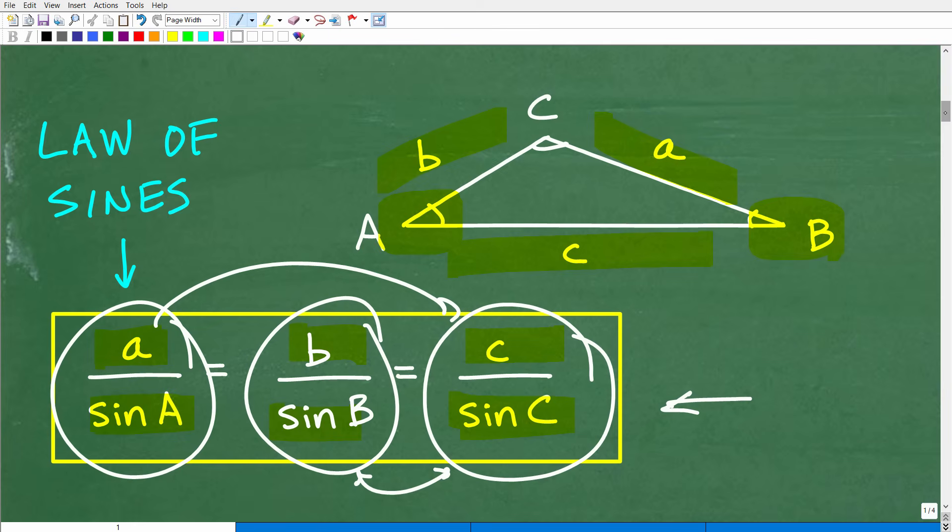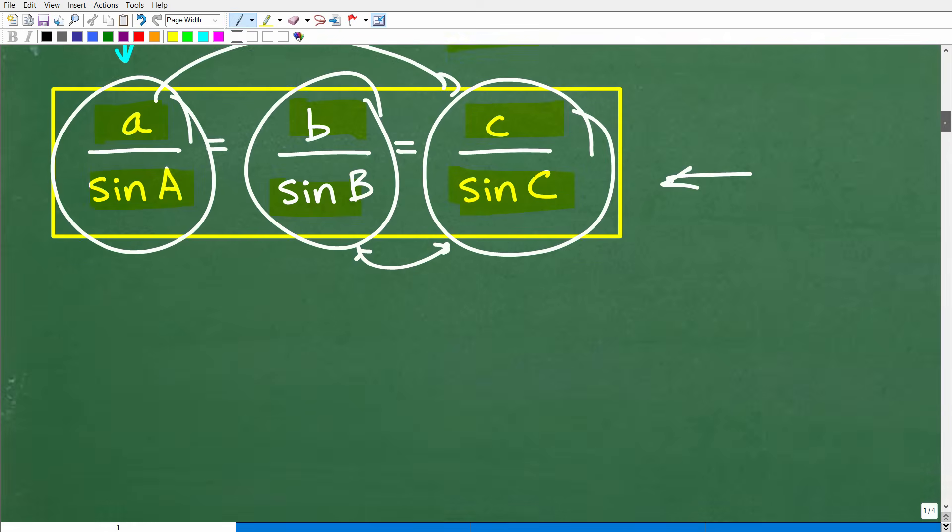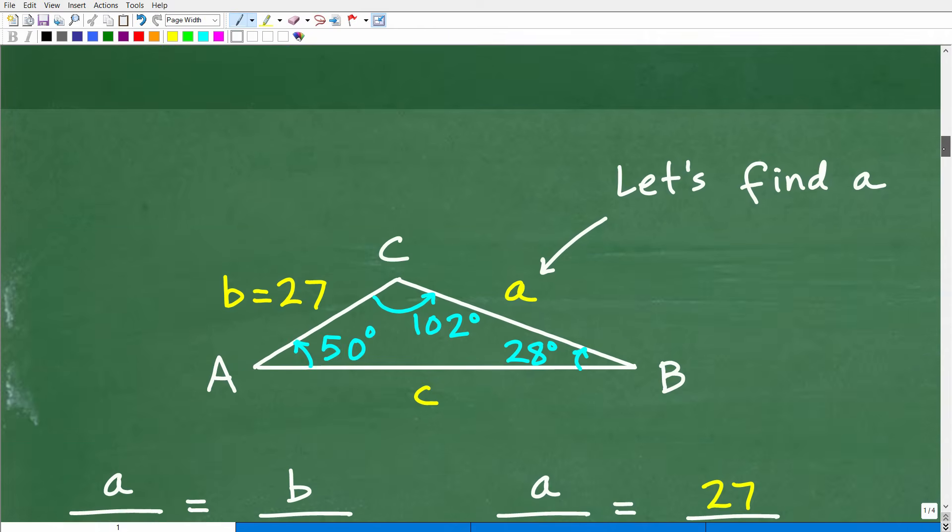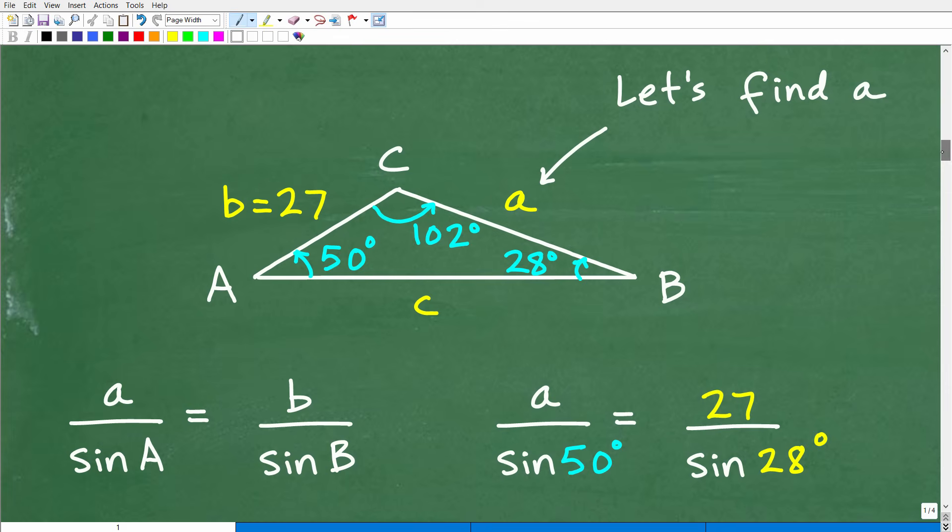So this will probably make better sense when we actually see the Law of Sines in action. Let's go and take a look at this now. So sometimes it's just best to kind of see something in action to really understand it. Okay, so here is our triangle. So this is the problem given to us. So we want to solve for a and c. So let's go ahead and figure out what a is. Let's find a.